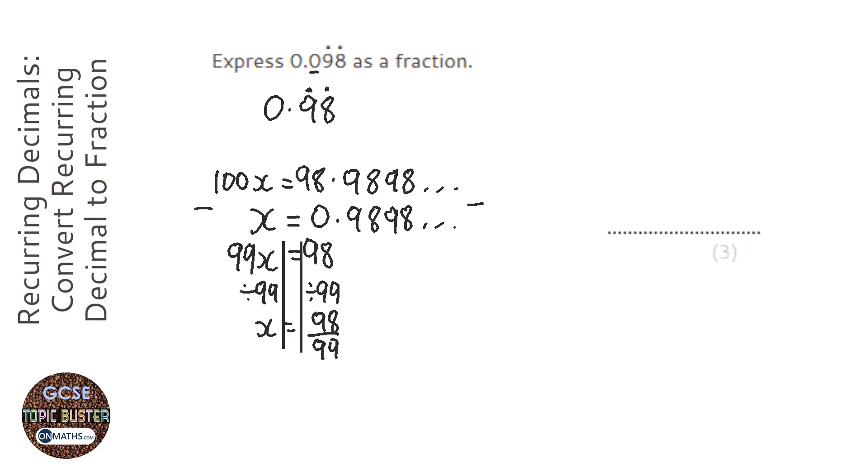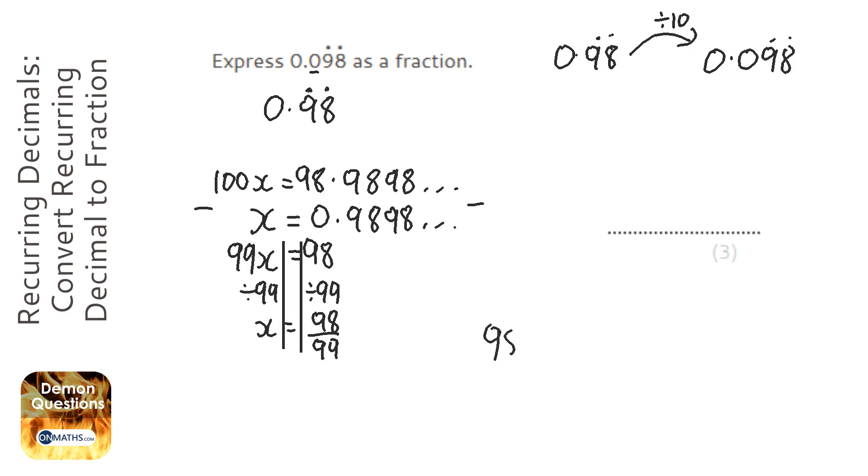Now we know to get from 0.98 recurring to 0.098 recurring, we're going to divide by 10. So we need to divide our fraction by 10.